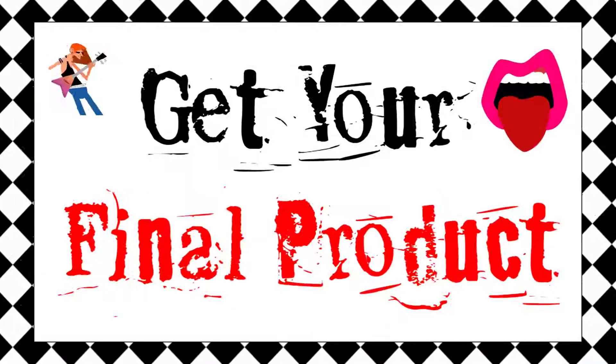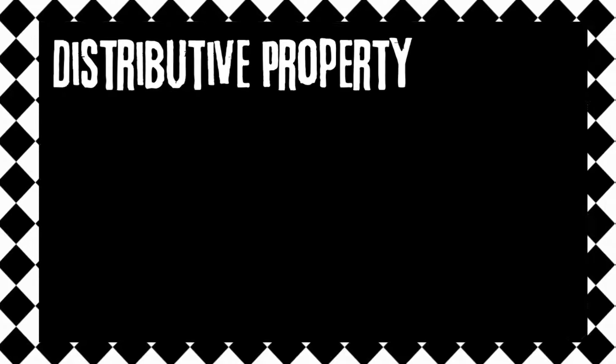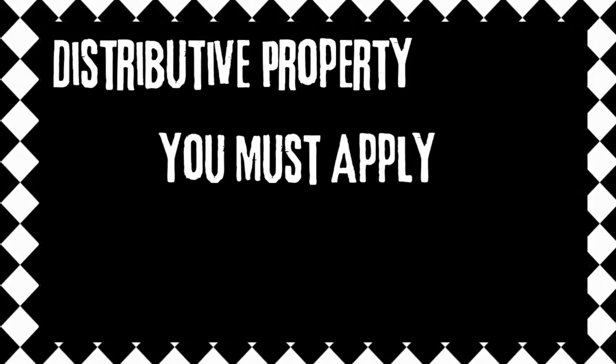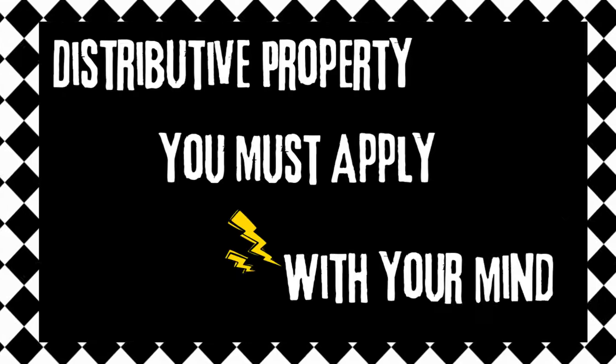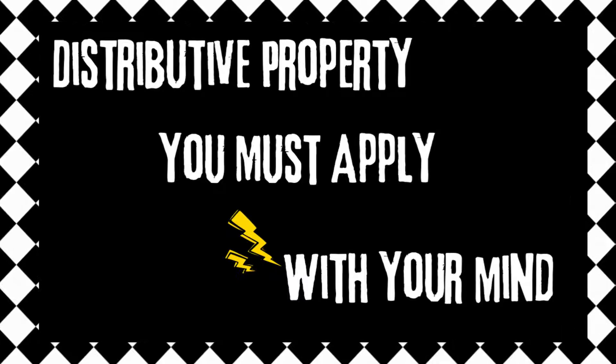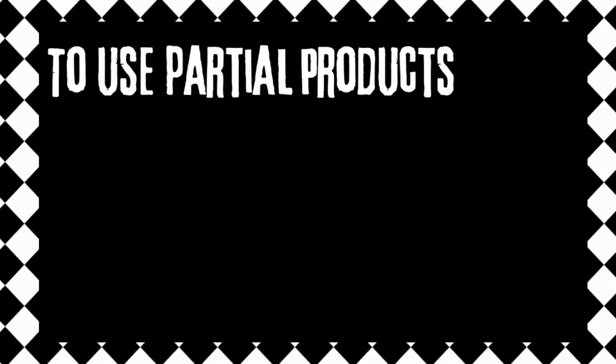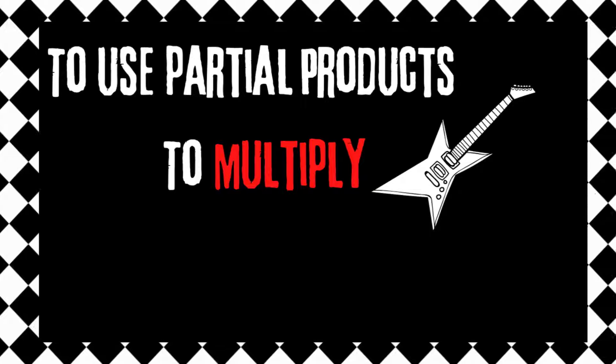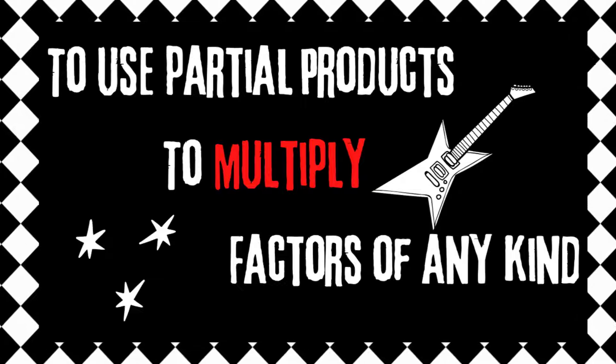To get your final product. Distributive property — you must apply with your mind to use partial products, to multiply factors of any kind.